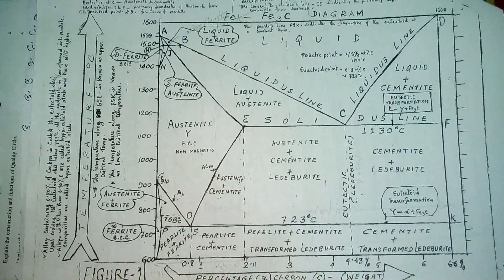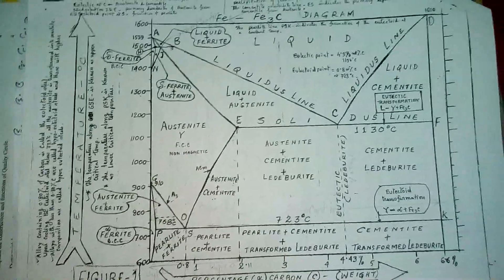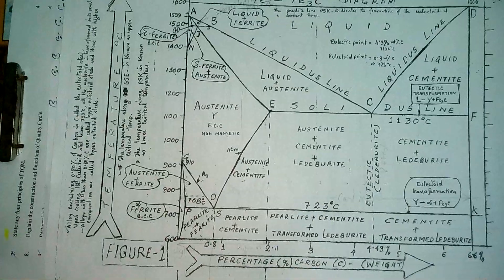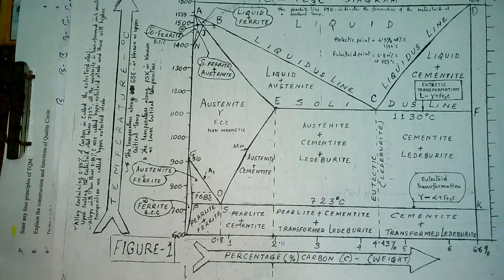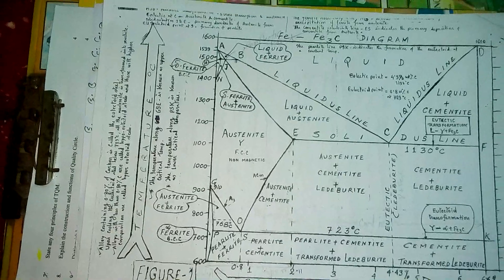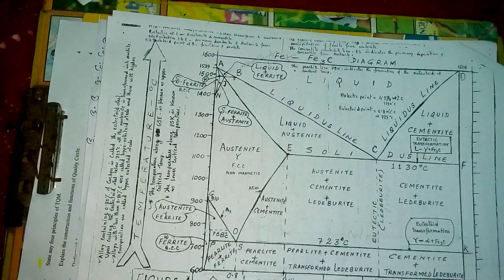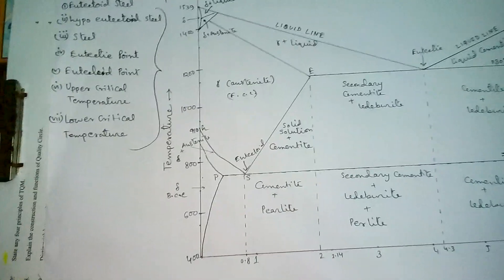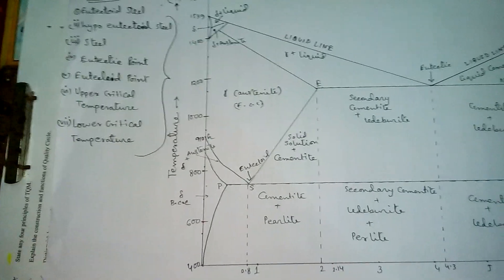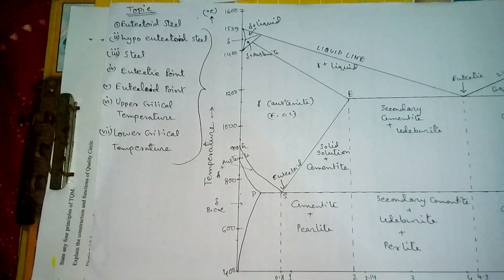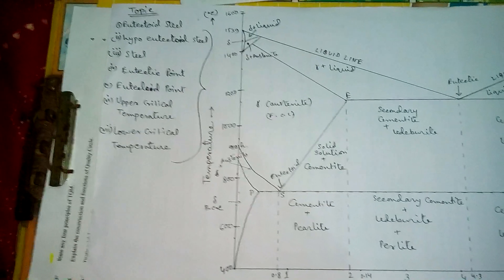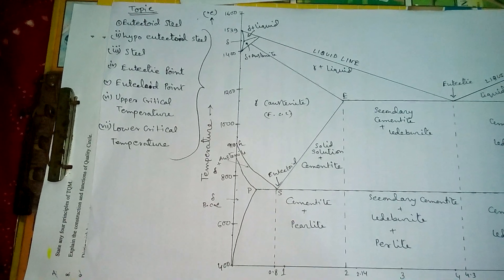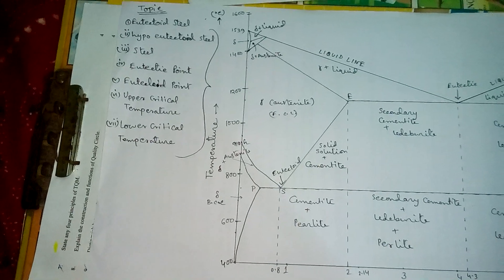Hello friends, I am Dishammaji and today we will discuss about the iron-carbon equilibrium diagram. This is very important — too much important for mechanical engineers. Everyone says that this is the map of the mechanical engineer. Now we discuss about this diagram. First of all, I simplify this diagram. Here we can clearly see some topics highlighted like eutectic point, eutectoid steel, hypo eutectoid steel, eutectoid point, upper critical temperature, and lower critical temperature. These are the most important topics to be discussed.